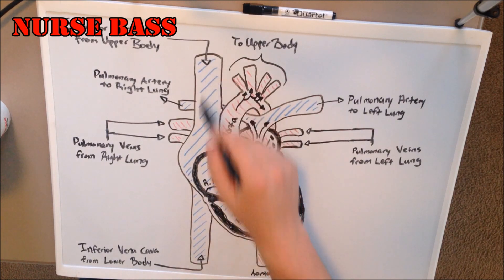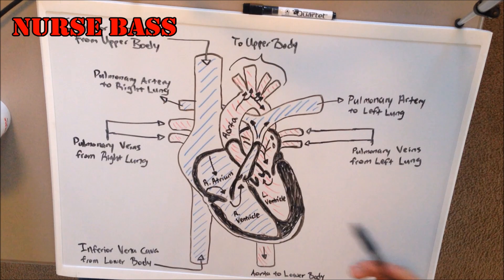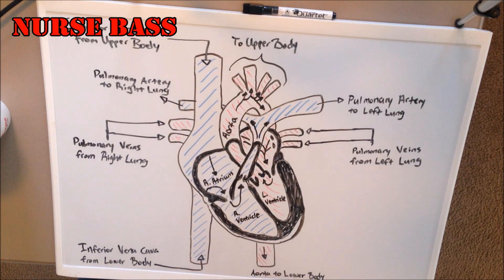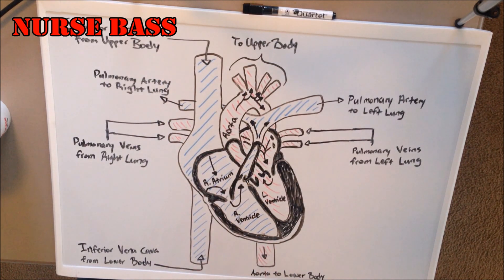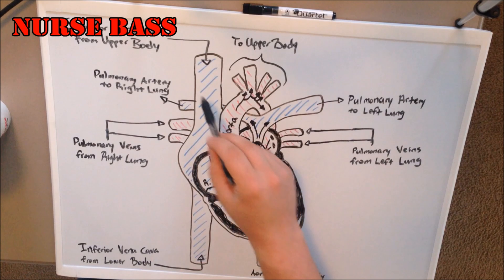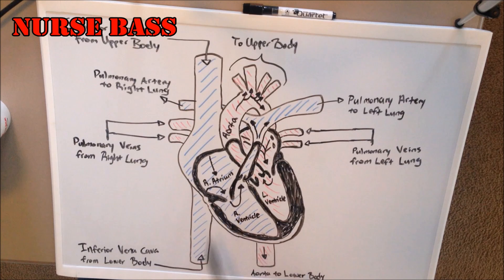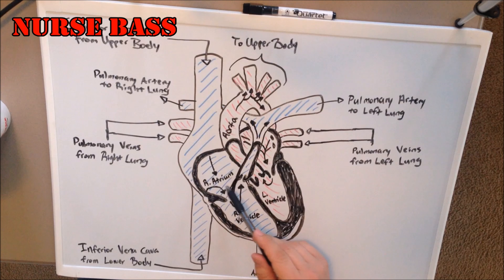Starting with deoxygenated blood: we have blood that has already passed throughout the body and it's coming from the upper part and the lower part of the body via the superior and inferior vena cava. This deoxygenated blood — also blood that is rich in carbon dioxide, the waste product — comes from the superior and inferior vena cava and pours into your right atrium. From your right atrium, as you can see via these arrows, it passes through the tricuspid valve and into the right ventricle.